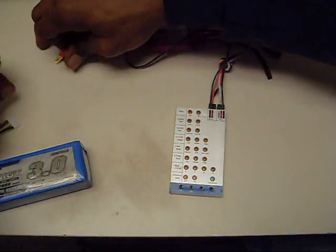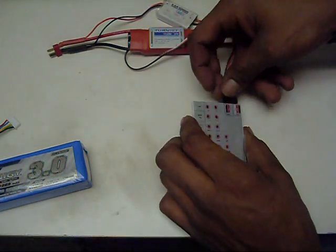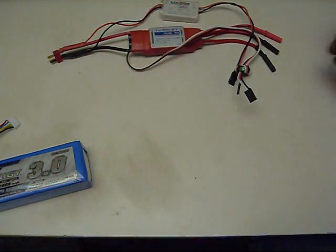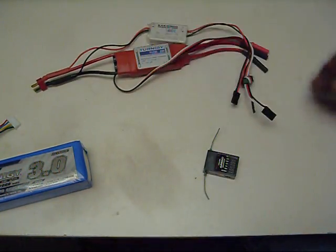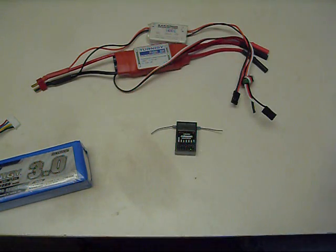Just go ahead and disconnect the battery, and disconnect it from the program card. So now, I would go ahead and install it on the helicopter, plug in the receiver, and I'm good to go.